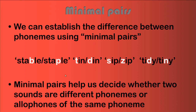Minimal pairs are used to distinguish between two phonemes. We replace just one phoneme inside a word — for example, 'stable' becomes 'staple,' 'tin' becomes 'dim,' 'sit' becomes 'zip,' 'tidy' becomes 'tiny.' Minimal pairs are very useful for two purposes: they help us decide whether two sounds are different phonemes or allophones of the same phoneme, and they help us practice these sounds.